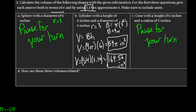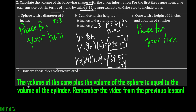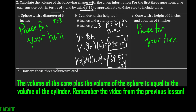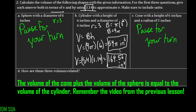For the bottom question asking how the three solids are related: the volume of the cone plus the volume of the sphere equals the volume of the cylinder. Remember the video from the previous lesson where they filled the rest of the cylinder — which had the sphere inside — with the cone's volume. The cone plus the sphere equals the cylinder when they share the same radius.